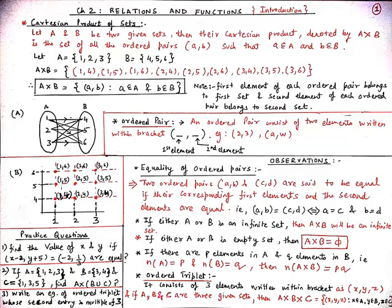Our second observation is if either A or B is an infinite set, then the Cartesian product A×B will be an infinite set. Our third observation is, if either A or B is an empty set, then its Cartesian product is always equal to phi or null.